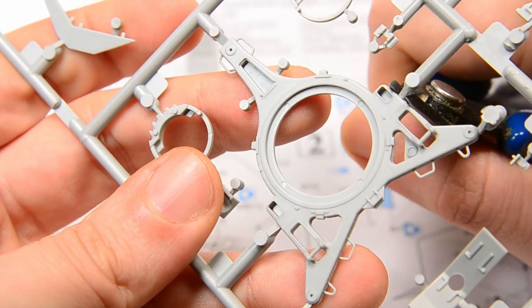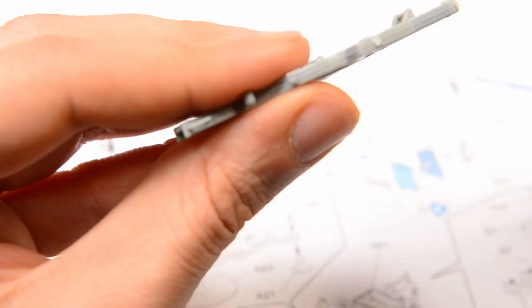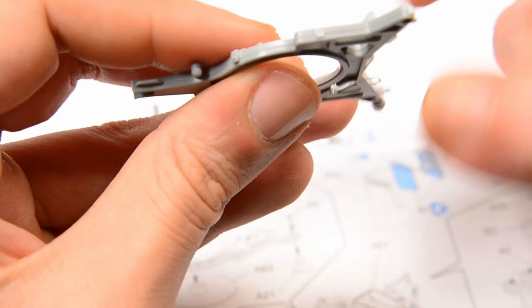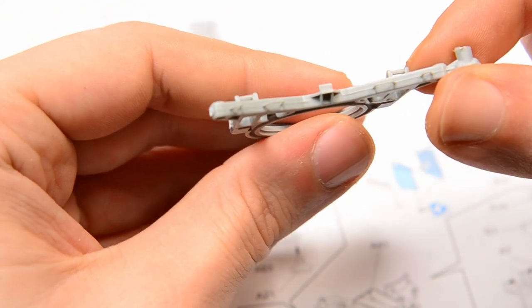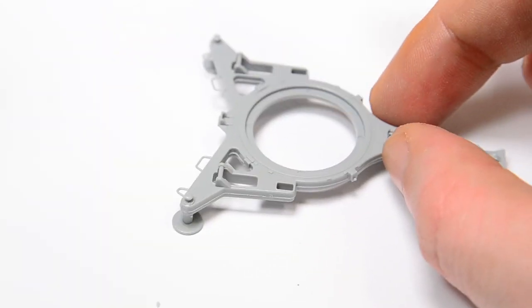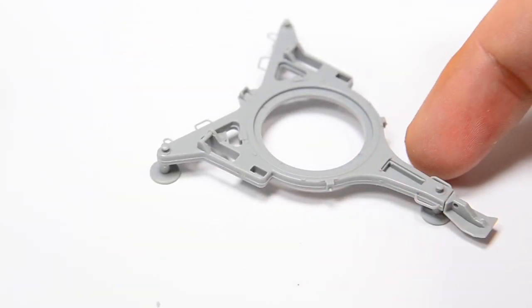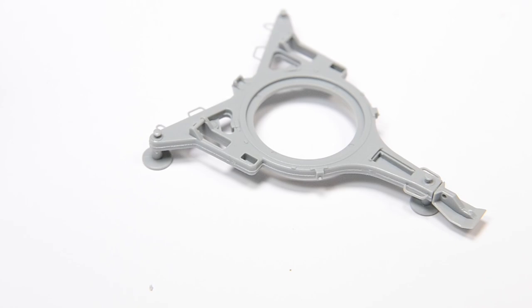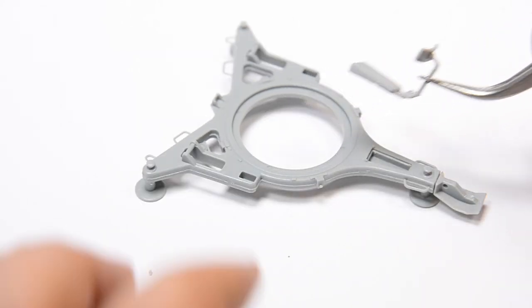This one is really highly detailed and there are a lot of weld seams that look like just some mold seams, but no, they are detailed, so we have to be a little bit careful when cleaning the model kit up. There are some differences between the early and late production of the flak 38.